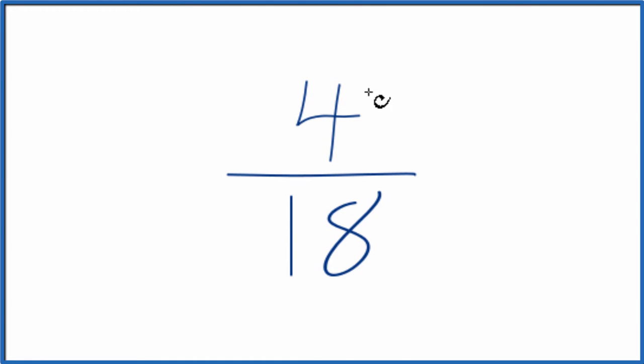One way to do that is to find the factors that go into 4 and the factors that go into 18. Find the greatest common factor.